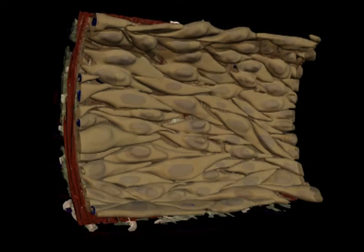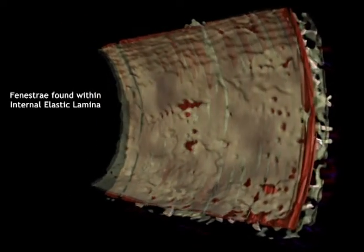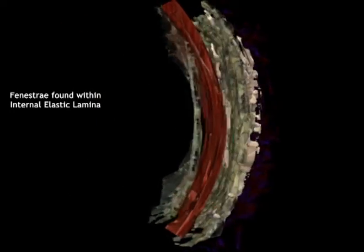Here we see a segment of the vascular wall showing the inner layer of endothelial cells. As the endothelial cells fade, we see the internal elastic lamina with its fenestrae, which allow communication between intima and smooth muscle cells of the tunica media.